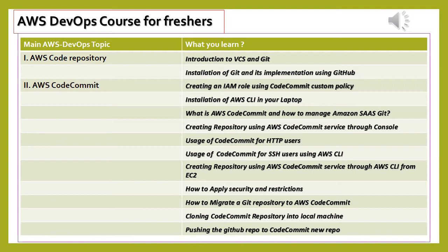Creating a Repository Using AWS Code Commit Service Through AWS CLI from EC2: in this session you will use CLI services and create the Code Repository. Before coming to the demo of your CLI usage, you need to study and practice for a correct demo. An error-free demo can give you the confidence to attend interviews confidently. If this task fails, they can disqualify you with CLI questions easily.